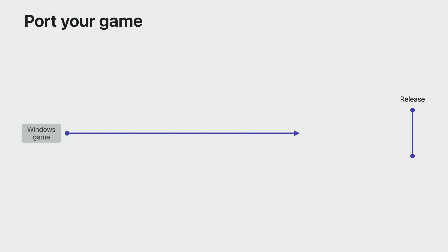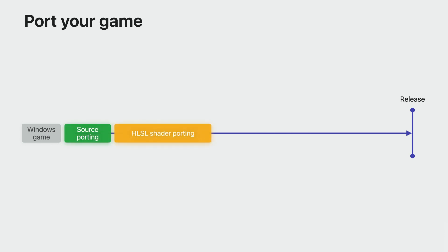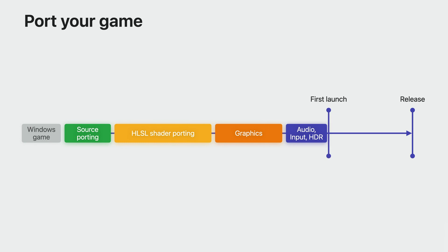Porting your Windows game to a whole new platform typically involves many steps before you even see your first scene running, including recompiling your source code, converting thousands of custom shaders from HLSL, re-implementing your graphics subsystem, and converting your use of audio, input, display, and HDR rendering — all before you can even see your first scene running natively. And then finally debugging and optimizing for performance before you release it.